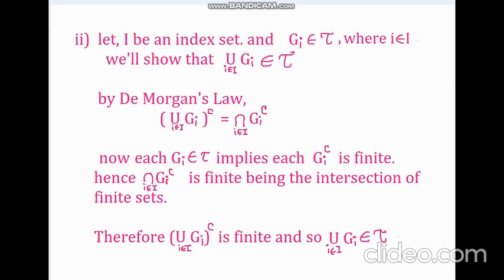Okay, now we will prove that tau satisfies axiom number 2. For this, let i be an index set and g_i belong to tau, where i belongs to the index set i. That is, g_i's are arbitrary number of open sets of x. We will show that the union of these arbitrary number of sets in tau also belongs to tau.